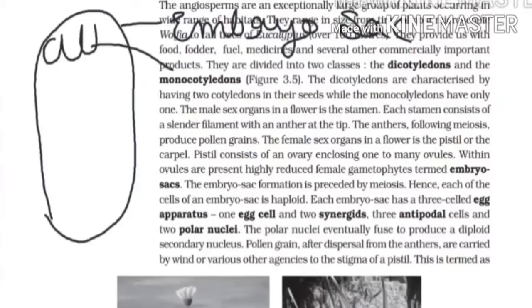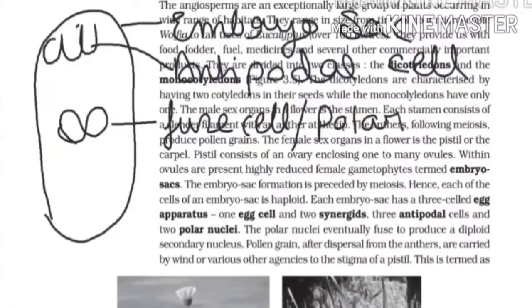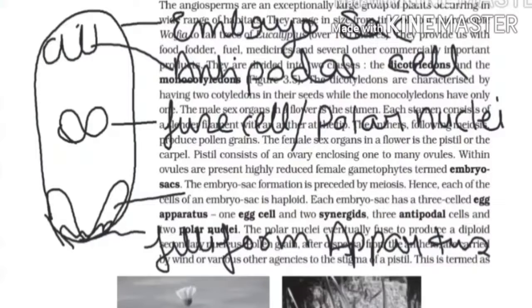Inside the embryo sac, there are three cells known as the antipodal cells — cells which give rise to the nourishment of the whole embryo. In the center of the cell, some fused cells are produced, which are known as polar nuclei. And there is a cushion-like structure known as the filiform apparatus. On the upper side of the filiform apparatus, there are two cells known as the synergids — cells which provide the nourishment and nutrition for the egg cell.